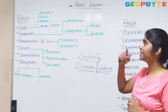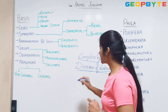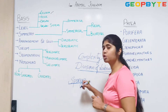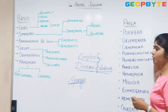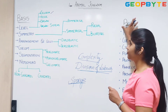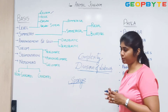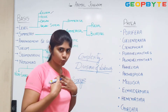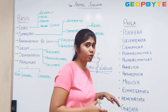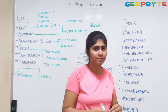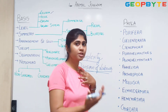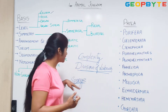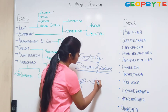Let us take an example of the cellular level. There is an organism called sponge. Sponge is the common name of organisms belonging to the phylum Porifera. Porifera belongs to the cellular level of organization. This organism doesn't have kidneys, lungs, or a heart as we do. Sponges do not have a proper digestive system, nervous system, or respiratory system. So how do they perform all these functions? These sponges perform these functions only based on cells.